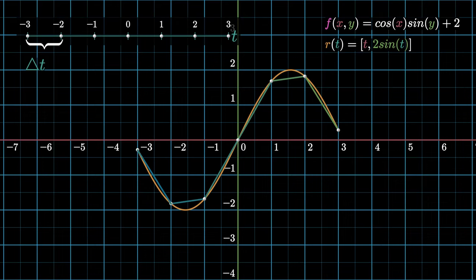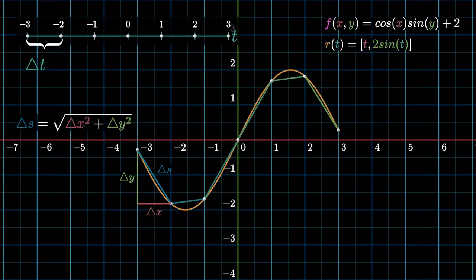The lengths of these bases, which we label delta s, have two components, delta x and delta y. Applying the Pythagoras theorem, delta s is the square root of sum of squares of these individual components.